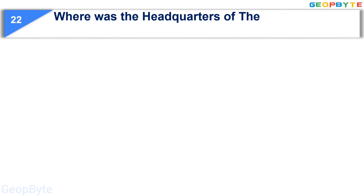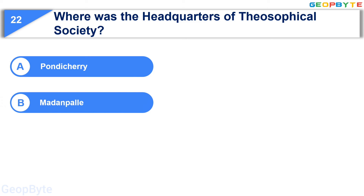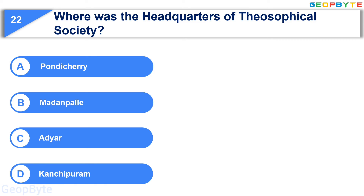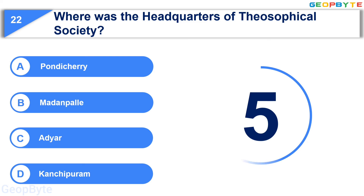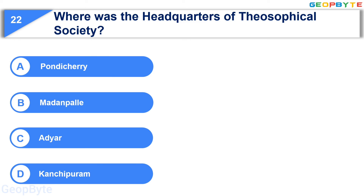Moving to the twenty-second question: where was the headquarters of the Theosophical Society? Option A: Pondicherry, Option B: Madanapalle, Option C: Adyar, Option D: Kanchipuram. Your time starts now. Your time is up and the correct answer is Option C: Adyar.